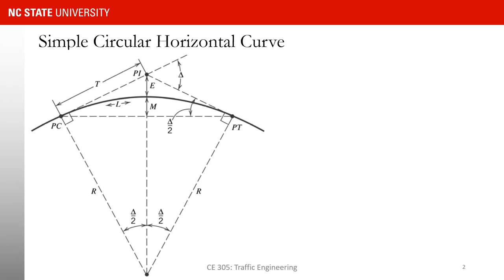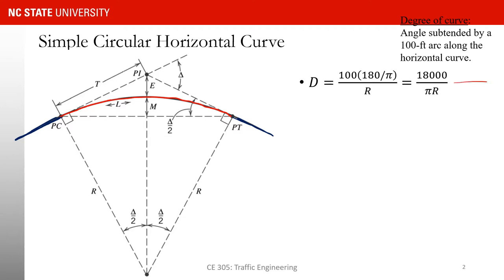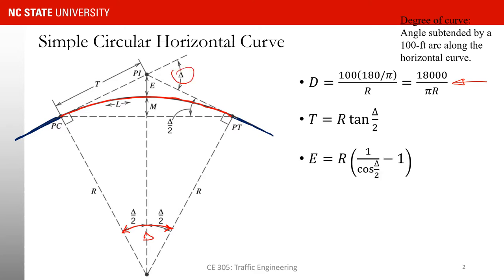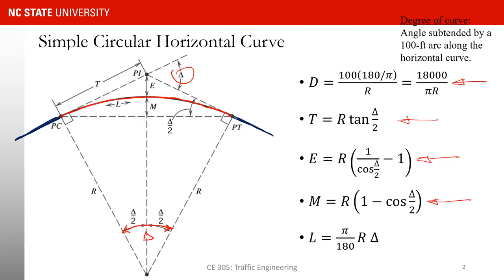Let's start with a quick recap of horizontal curves. We have a tangent line just before the PC and another tangent line, and we use a circle to connect these two tangent lines together. We talked about the degree of curve and its equation. The length of T or tangent is equal to R times tangent of delta over 2, where delta is the central angle. We also discussed E, M, and how to determine the length of the curve. In the previous class I showed how you can derive each of these equations by looking at different triangles.